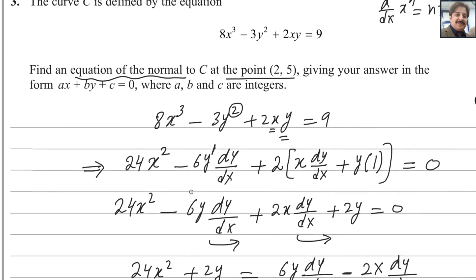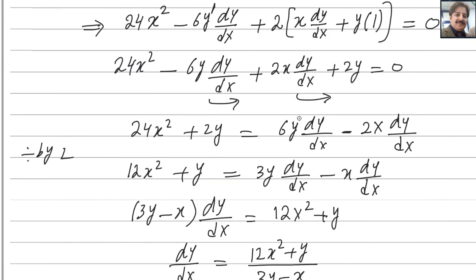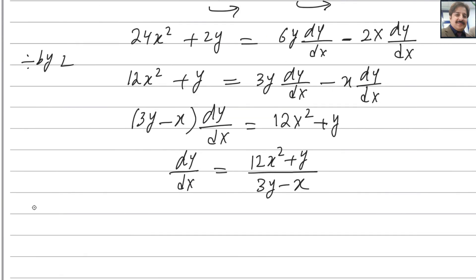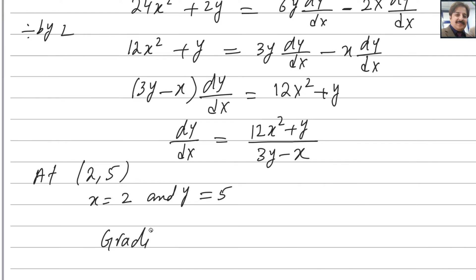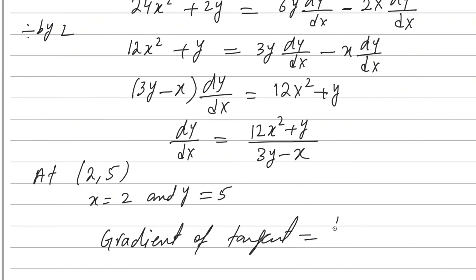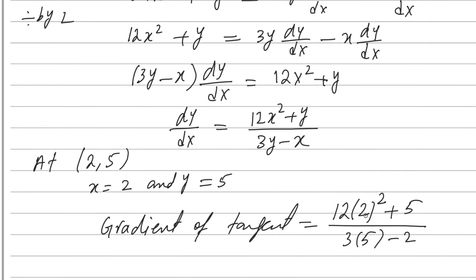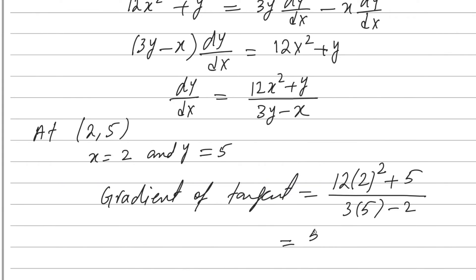This is the gradient formula. To find the gradient of the tangent at point (2, 5), plug in x = 2 and y = 5: gradient of tangent = (12×2² + 5) / (3×5 - 2) = (48 + 5) / (15 - 2) = 53/13.